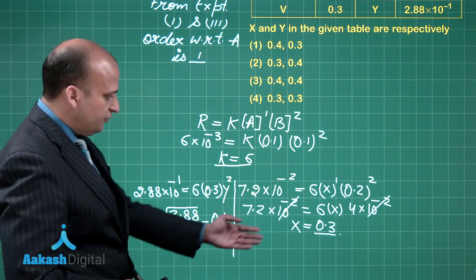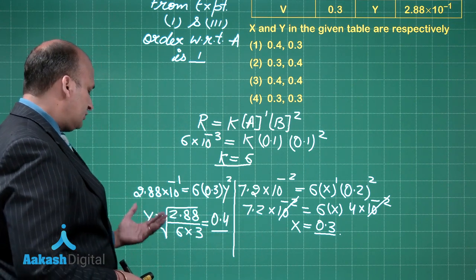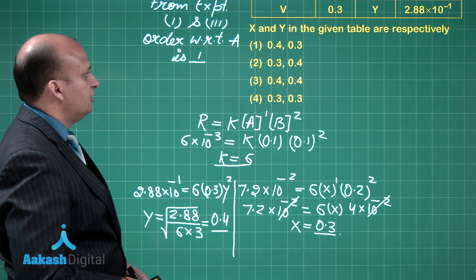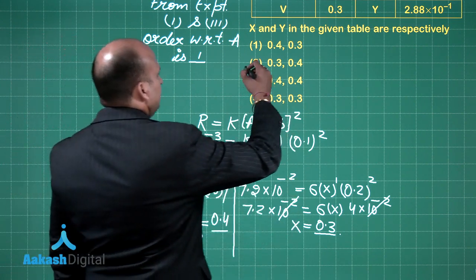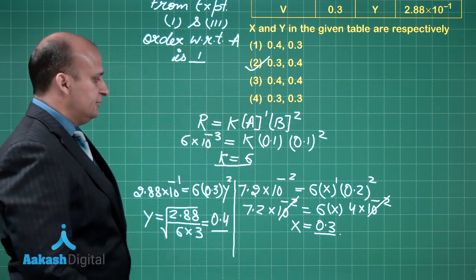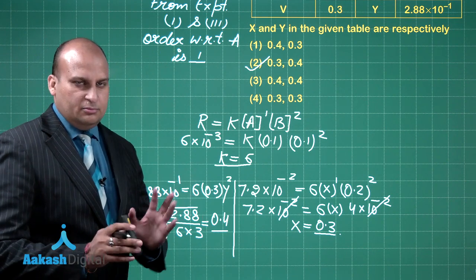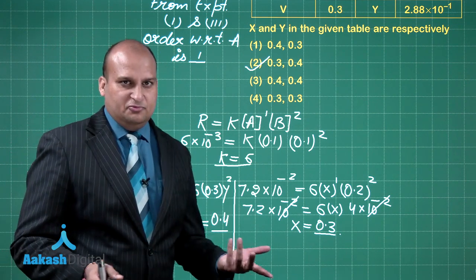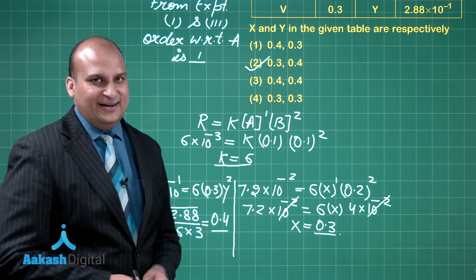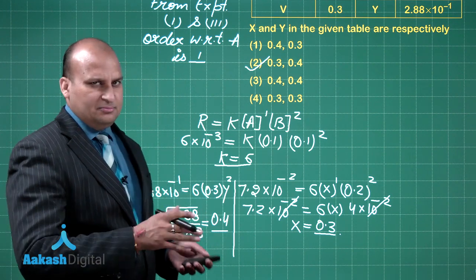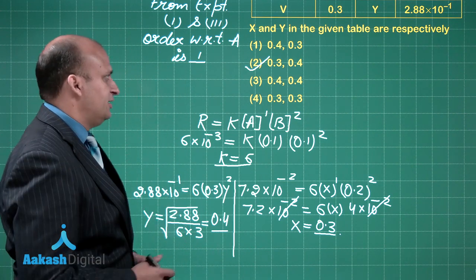So dear friends, what is the value of X we are getting? 0.3. What is the value of Y you are getting? That is 0.4. So a numerical bit lengthy, but one out of 25 can work, considering this to be an above average question. Let us go to the next question.